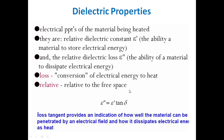One more property relates ε' and ε'' to each other: the loss tangent, or tan δ, which equals ε'' divided by ε'. It provides an indication of how well a material can be penetrated by an electric field and how it dissipates electrical energy as heat. Dielectric loss through a material is maximum when the dielectric constant falls.